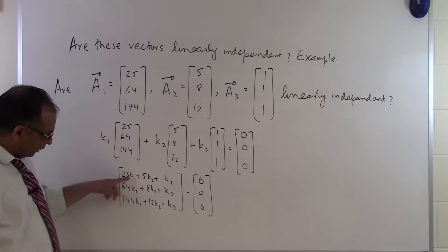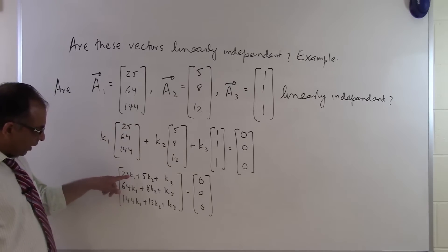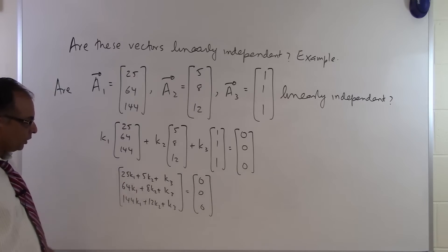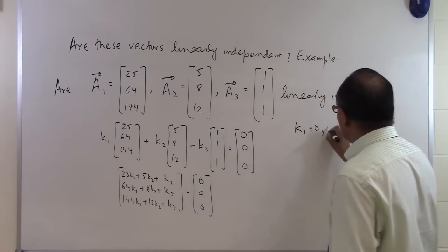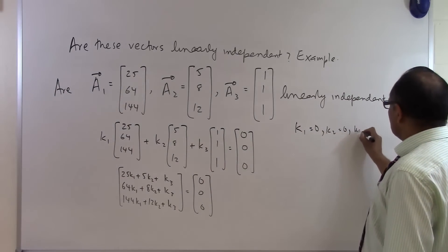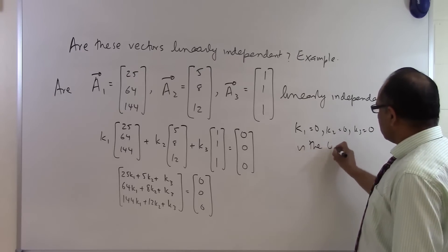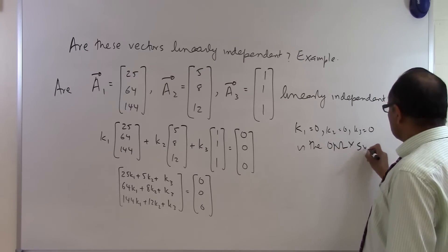You can obviously see that k1, k2, and k3, if they are 0, it will be a solution to this set of equations. But that is in fact the only solution. k1 equal to 0, k2 equal to 0, k3 equal to 0 is the only solution.